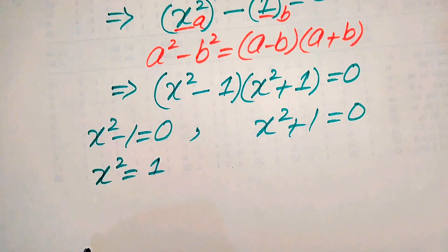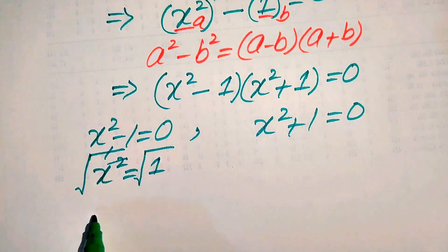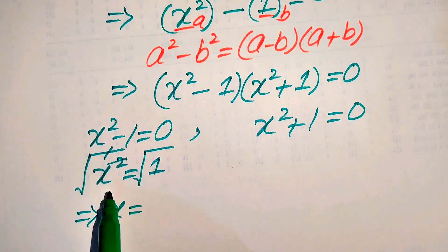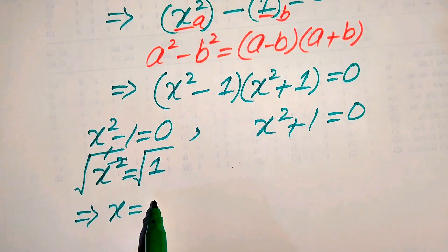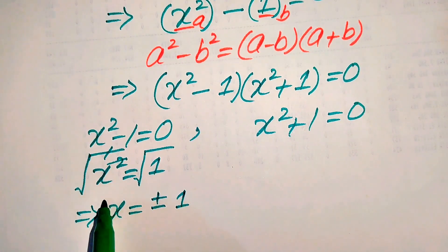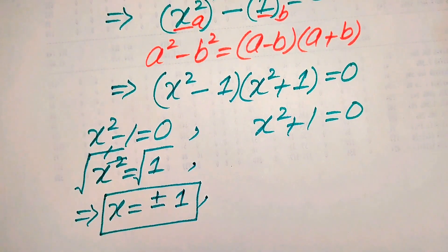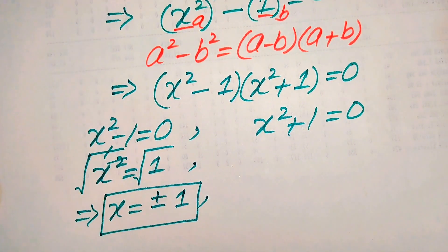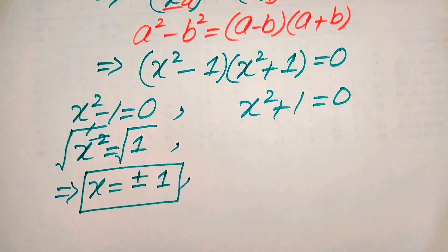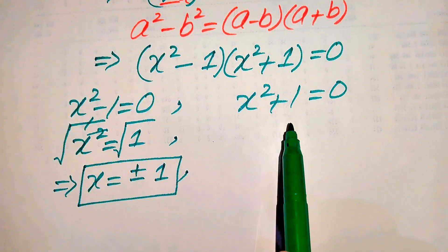Moving minus one to the right-hand side gives x squared equals one. Taking the square root on both sides, the square and square root cancel, and we get x equals plus or minus one. These are the first two real roots of the given equation. Since the equation is fourth order, we still need two more roots from the second case.